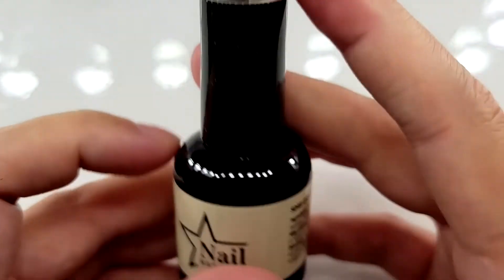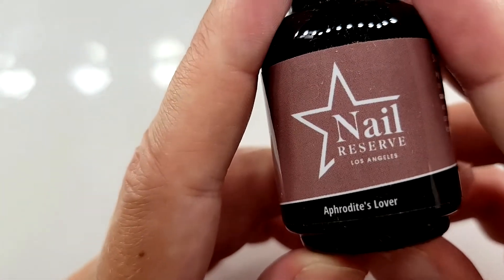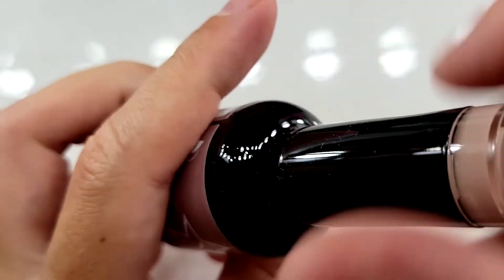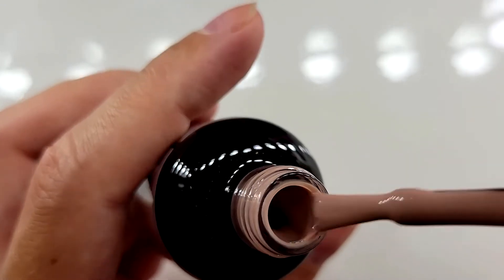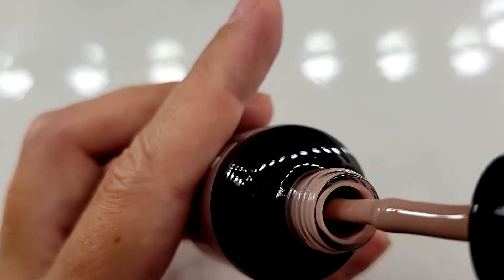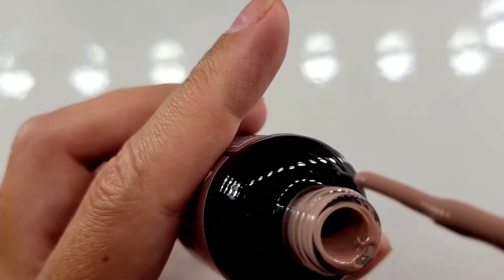And then the last color I got sent was Aphrodite's Lover. There's the color on top. Let's see what it looks like in the bottle. Okay, so this is like a darker nude-ish color. I am drawn to more like brighter colors.